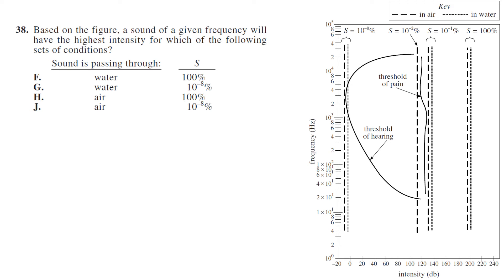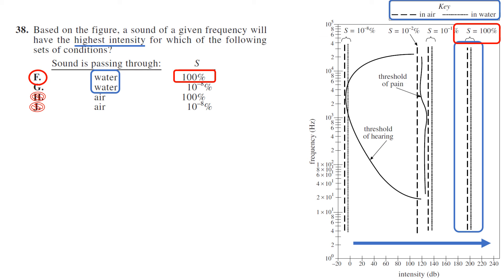Based on the figure, a sound of a given frequency will have the highest intensity for which of the following conditions? We're looking for highest intensity - that's the x-axis at the bottom. Let's look at sound is passing through. Air is dashed, water is dotted. The dotted line is further to the right than the dashed line, so water is more intense. Now looking at S: 100% is further to the right than 10 to the negative 8, which is way over on the left. So your answer is F.